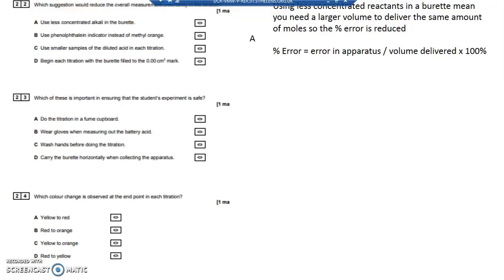Because remember, percentage error is the error in the apparatus, which is fixed—the error in the burette might be plus or minus 0.1cm³—divided by the volume that's actually delivered. If you increase the volume delivered by using a more dilute solution, then your percentage error comes down.